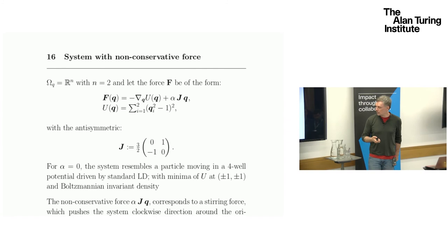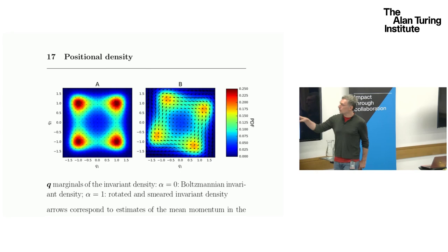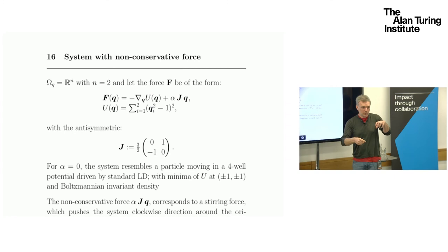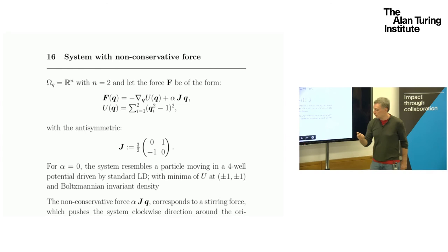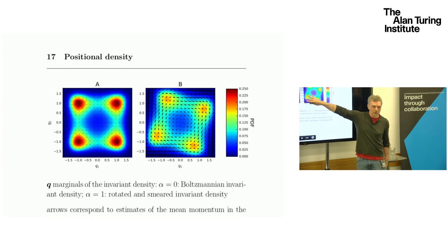It's a stirring force, which pushes the system clockwise around the origin. This is for, and I'm sorry, I forgot to say there is an alpha here, which allows us to weight the effect of the non-conservative part with respect to the normal potential.